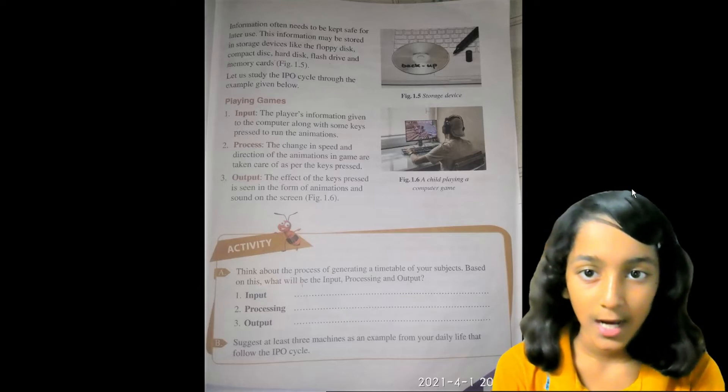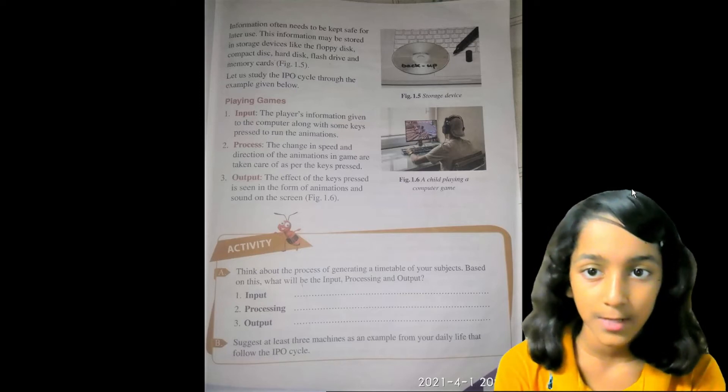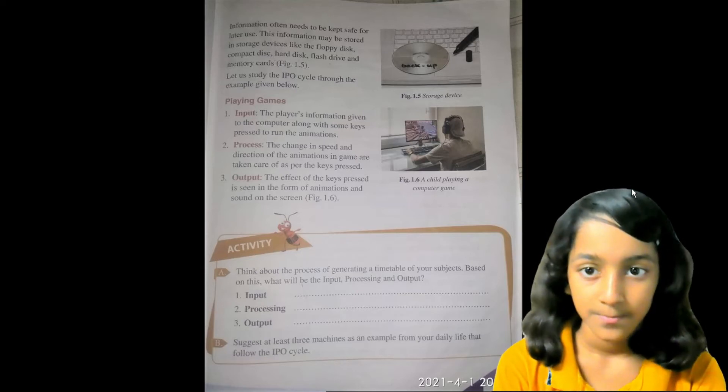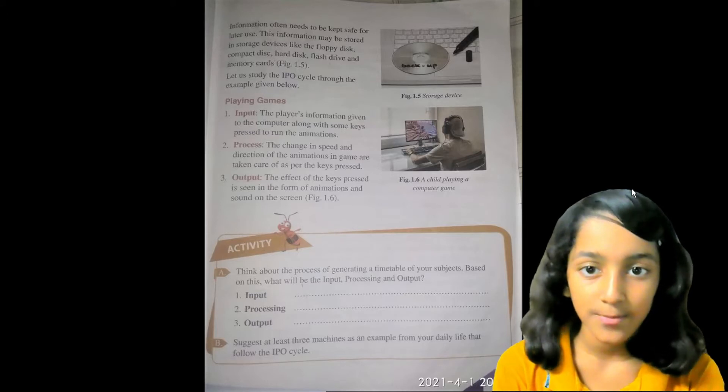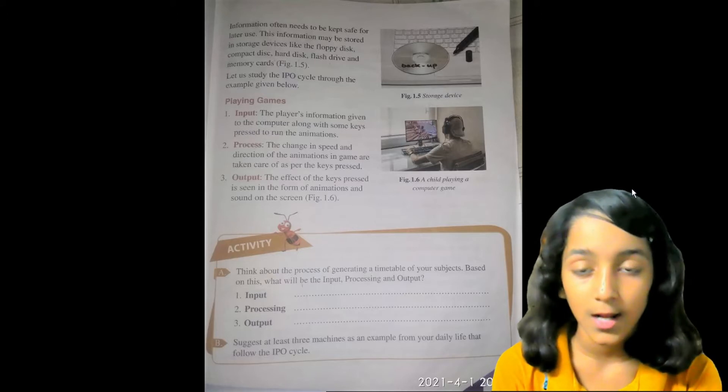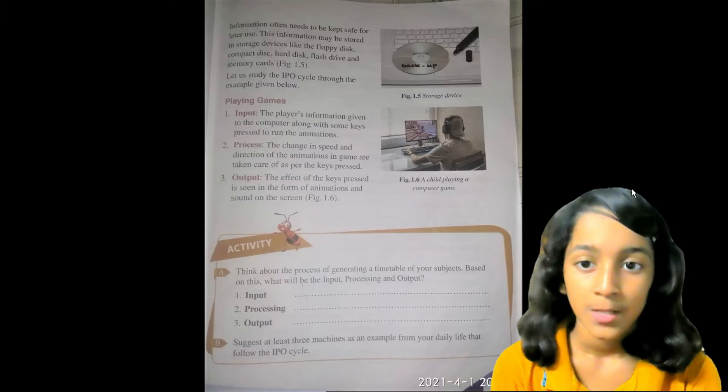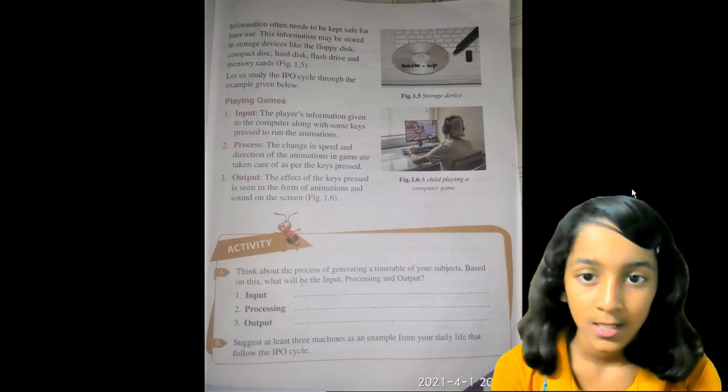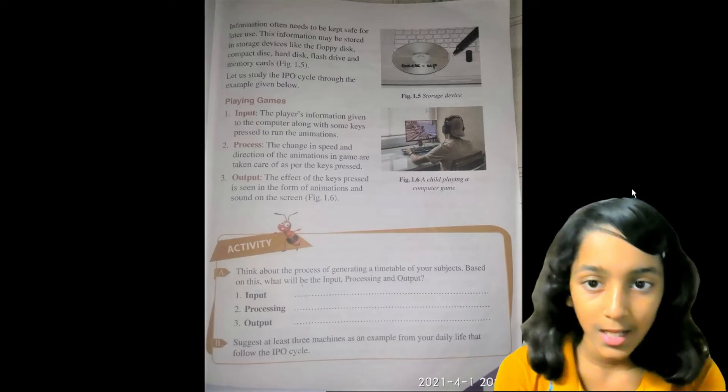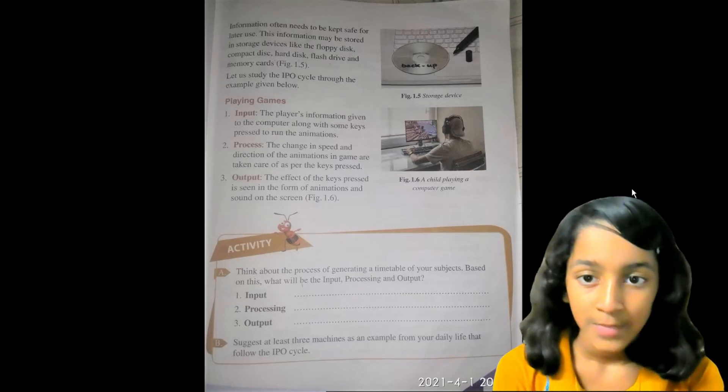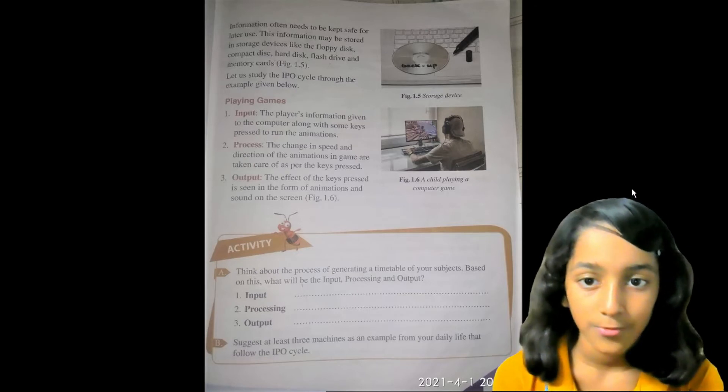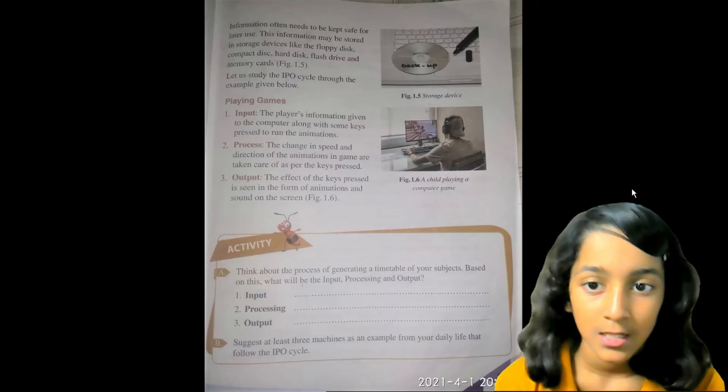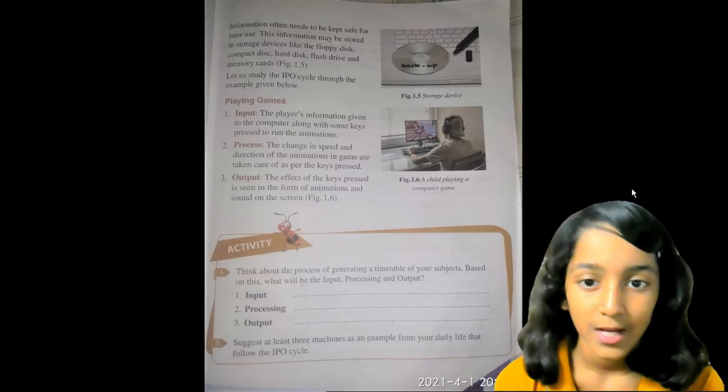Let us study the IPO cycle through the example given below. Playing Games. Input: The player's information given to the computer along with some keys pressed to run the animation. Process: The changes in speed and direction of the animation in game are taken care as per the keys pressed. Output: The effect of the keys pressed is seen in the form of animation and sound on the screen.